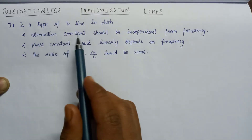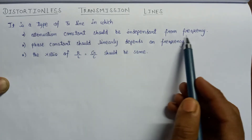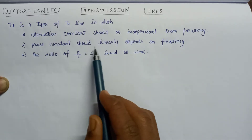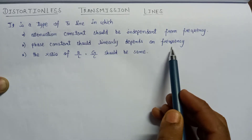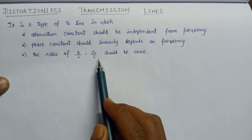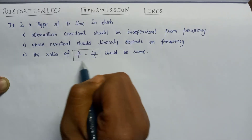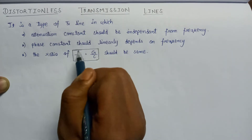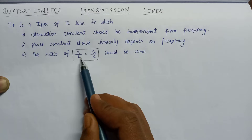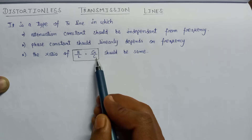A distortionless transmission line is one in which the attenuation constant is independent of frequency, the phase constant beta is linearly dependent upon frequency, and the ratio of R over L to G over C should be the same. This is the most important condition: the ratio of series resistance to series inductance should equal the ratio of parallel conductance to parallel capacitance.